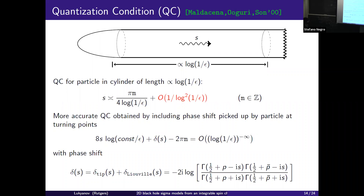That was actually the motivation for our work with collaborators. We performed numerical work and found that indeed — not just for certain classes of states but for the full partition function — numerically, the partition function of the spin chain coincides with the partition function of the Euclidean black hole. We revised the IGS conjecture accordingly.